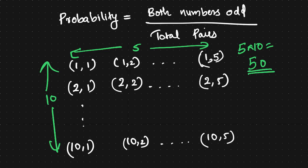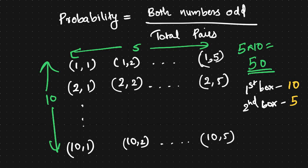This is the main calculation. The first box has 10 slips and the second box has 5 slips. These two boxes are independent. The total number of pairs is 5 times 10, which is equal to 50.